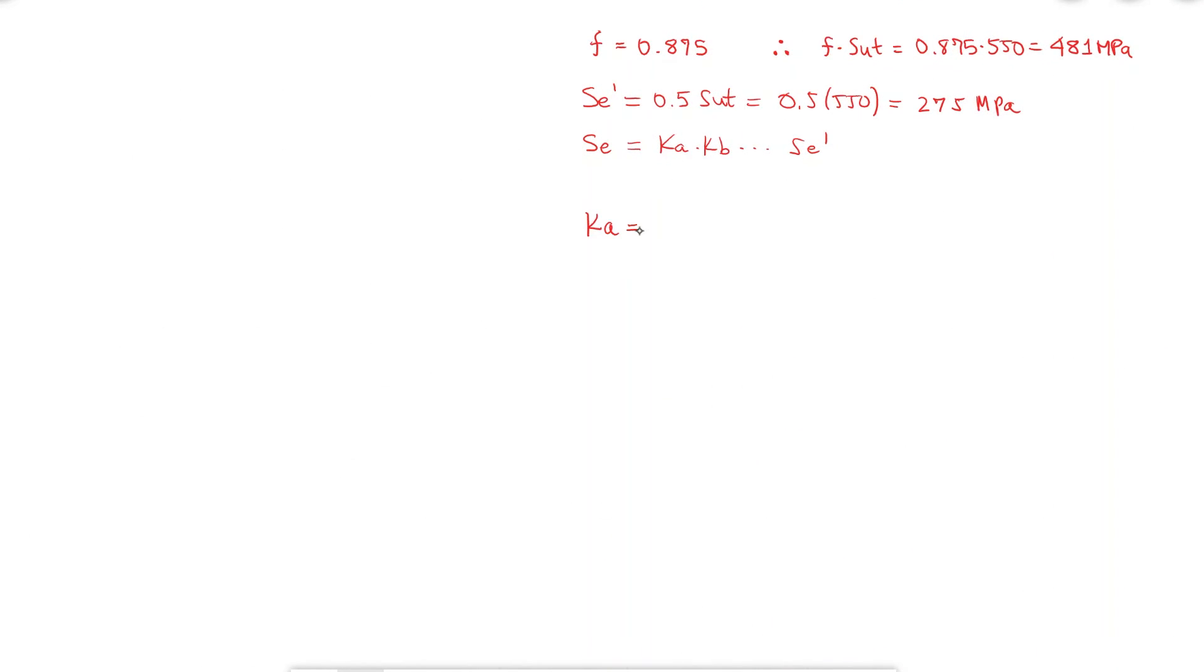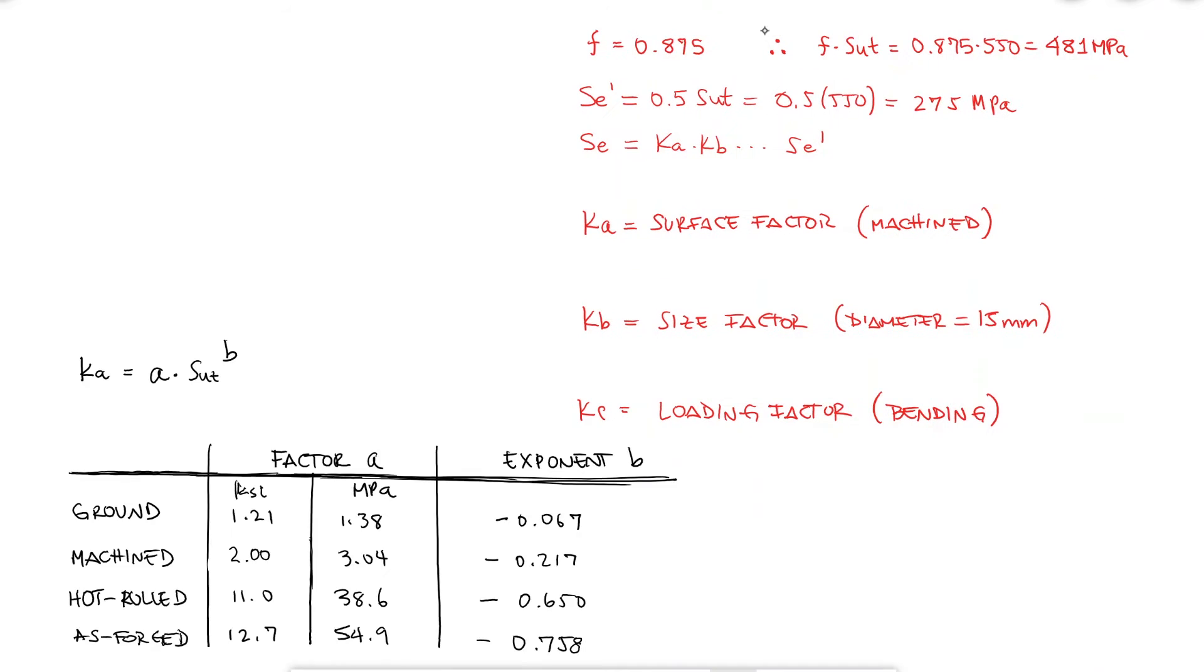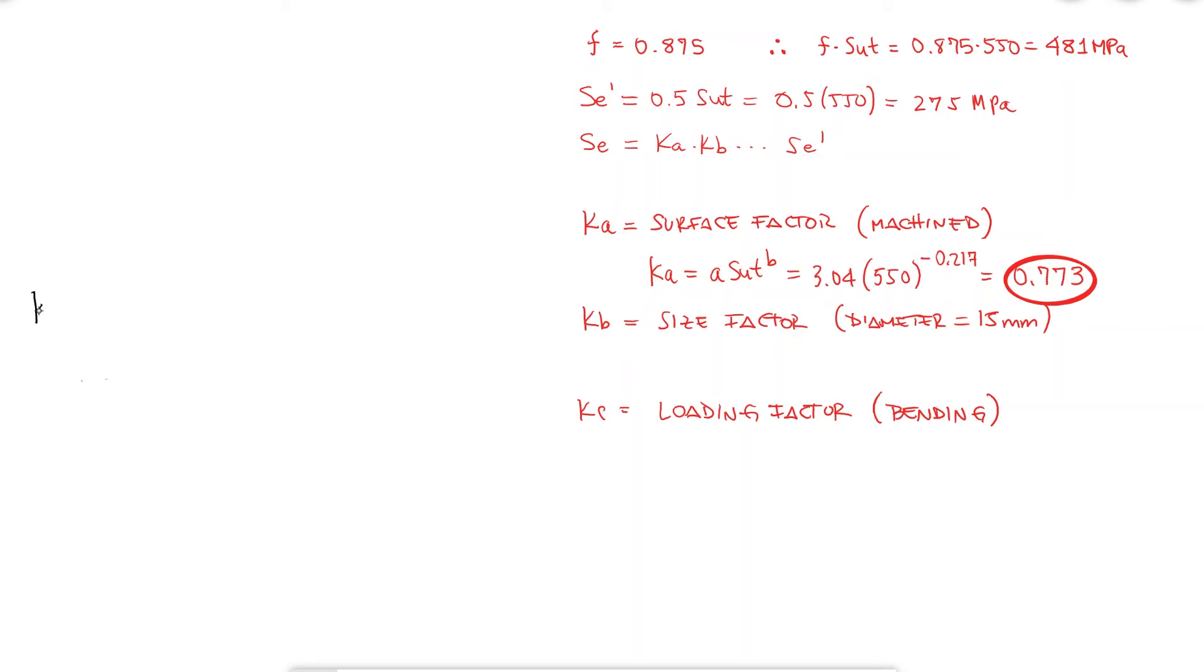However, I know that the surface finish, meaning the surface factor, the size factor, and the loading factor are all important and I should take them into consideration. From our previous video, we know that depending on the surface finish and the ultimate strength value, we can calculate the surface factor. Since our part was machined and our ultimate strength is in MPa, I used the corresponding values for the factor A and the exponent B to calculate KA. From what we know about the size factor, we can calculate the value for KB if we know the diameter of our part. And in this case, it doesn't need to be an equivalent diameter because the part is in fact a shaft and it is rotating.